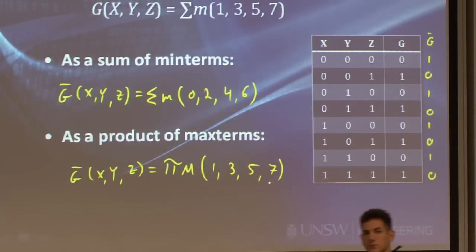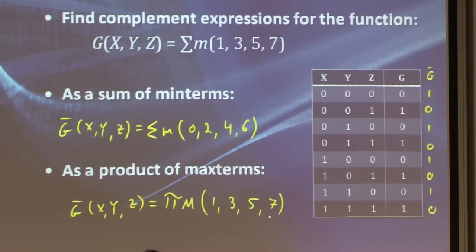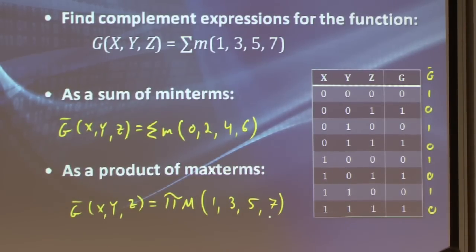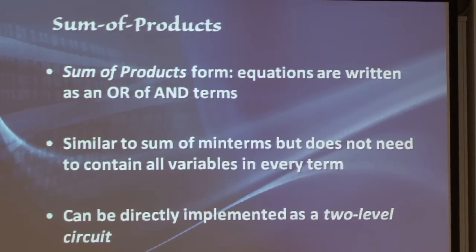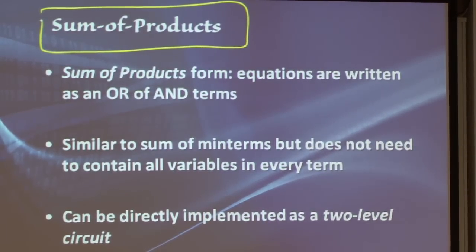We now know what minterms and maxterms are, and how to express functions as sum of minterms or product of maxterms. However, expressing it this way can be a bit redundant — we may have more terms than needed and may be able to optimize further. This is where a new term comes in: sum of products, as opposed to sum of minterms. Sum of products is a similar form, only the constraint that all variables must be present in every term is lifted.